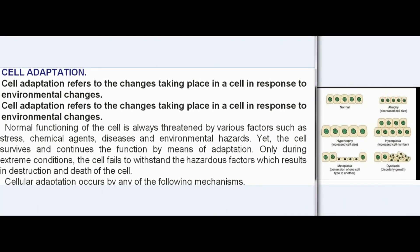Cell adaptation refers to the changes taking place in a cell in response to environmental changes. Normal functioning of the cell is always threatened by various factors such as stress, chemical agents, diseases, and environmental hazards. Yet the cell survives and continues to function by means of adaptation. Only during extreme conditions does the cell fail to withstand hazardous factors, resulting in destruction and death. Cellular adaptation occurs by any of the following mechanisms: atrophy, hypertrophy, hyperplasia, dysplasia, and metaplasia.